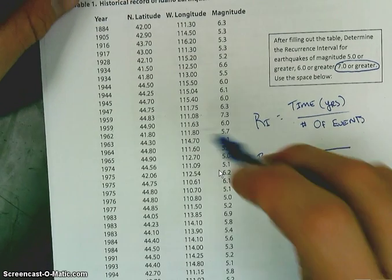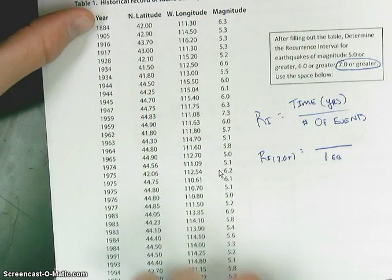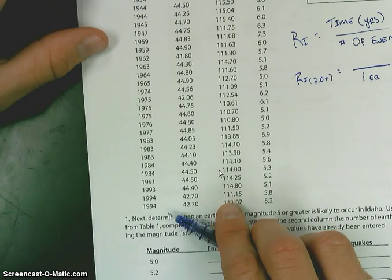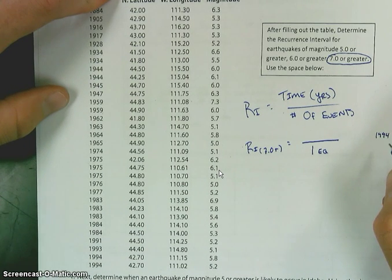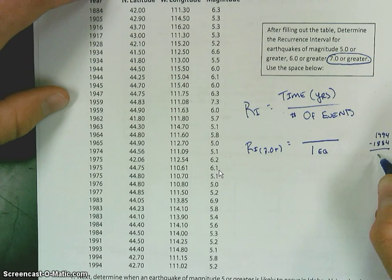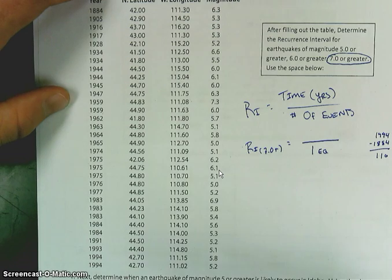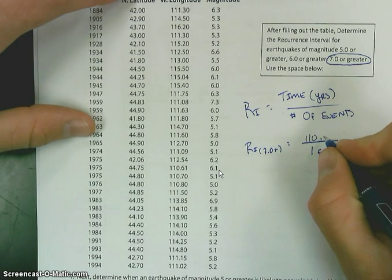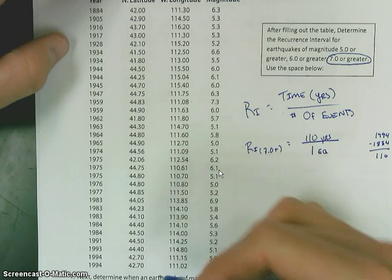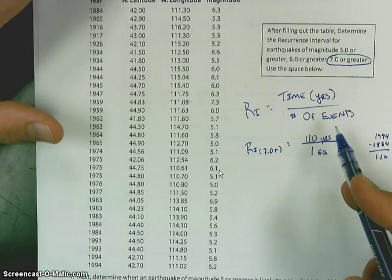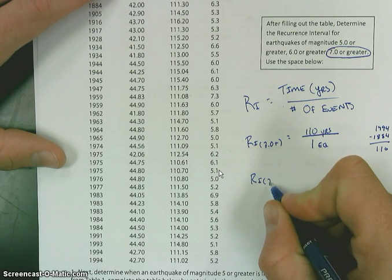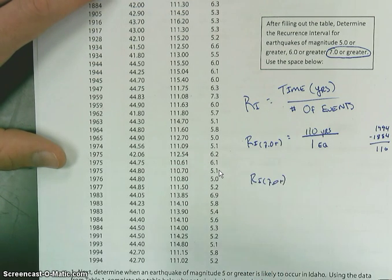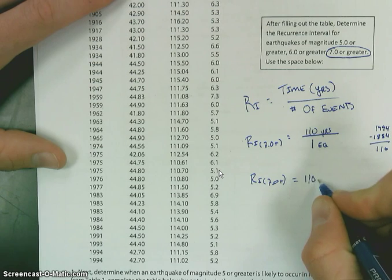Now the amount of time: the first event dates all the way back to 1884, and the most recent date I have is 1994. If I take 1994 and subtract 1884, I come up with 110 years. So I take that time — 110 years — and I know there was one event of that magnitude. My recurrence interval for a 7.0 or greater earthquake is going to be 110 years.